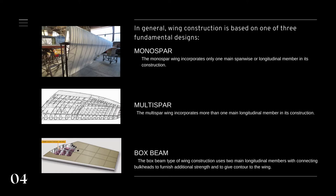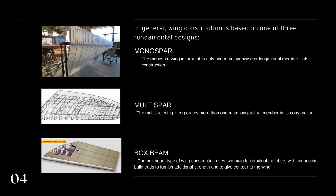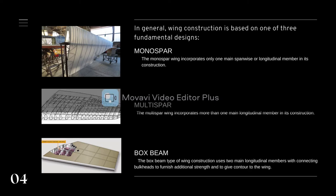The mono spar wing incorporates only one main longitudinal member in its construction to carry the loads. The ribs or bulkheads supply the necessary contour or shape to the airfoil. This type of design is sometimes modified with an additional false spar or light shear web through the trailing edge for support of control surfaces. However, the strict mono spar wing is not a common design used in aircraft.